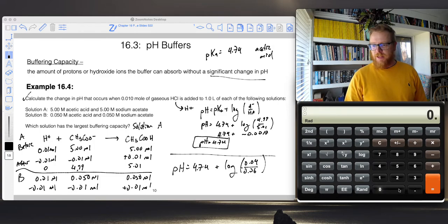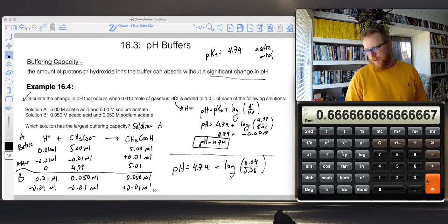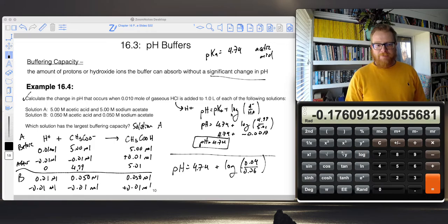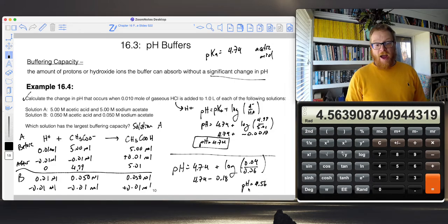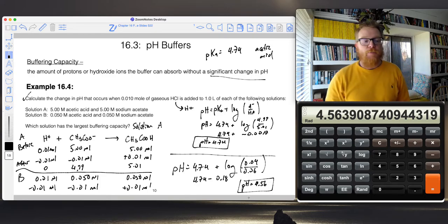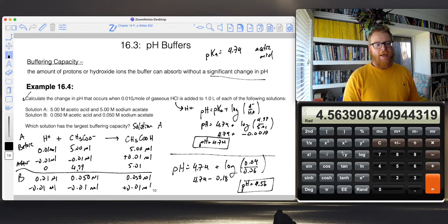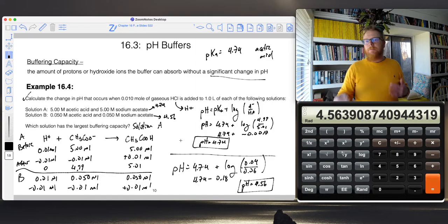That number is going to be much more significant than what we saw before. 0.04 divided by 0.06, and I take the log of that. My pH is going to be 4.74 minus 0.18, and that is a much more significant change. The pH of that new solution is 4.56. Just by looking at this problem and seeing 5 molar of acetic acid and 5 molar of sodium acetate, we can say automatically that one has to have the larger buffering capacity. After the H plus is added, the pH of solution A becomes 4.74, but for solution B, that pH becomes 4.56. There was a much more significant change in pH for solution B because it had a much lower buffering capacity.